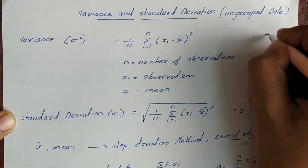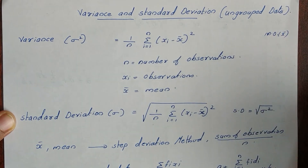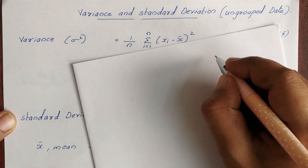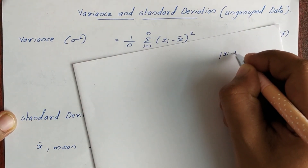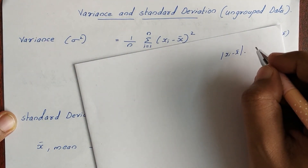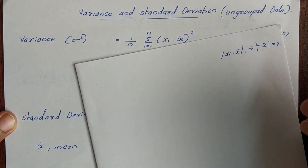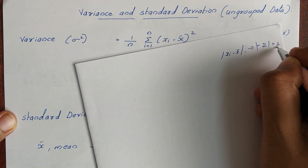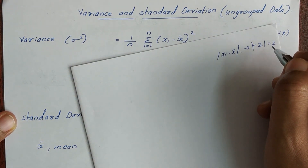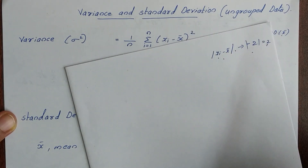Now we will review mean deviation — mean deviation about the mean and mean deviation about the median. The drawback of mean deviation is that it uses the absolute value, where the absolute value of a deviation gives a positive result. We will use this drawback to motivate the next method: Standard Deviation.